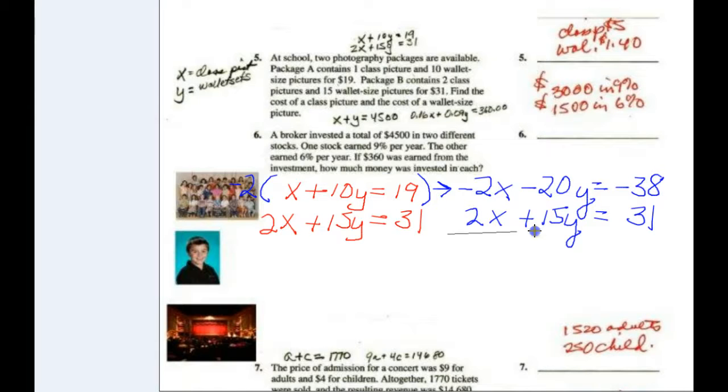So now what I'm going to do is put my line. And these will cancel out. That's what I wanted. I modified this equation so it would do that. This now becomes a negative 5y equals a negative 7. Now I'm going to divide both sides by a negative 5. And I get y. Remember, is the wallet sheet. It's going to be 7 fifths. But that's a fraction. They want to know that in dollars. So 7 fifths would equal a dollar 40.